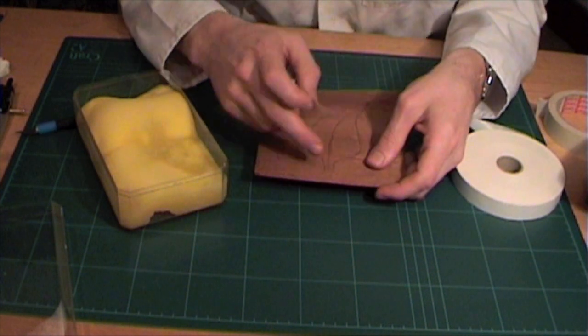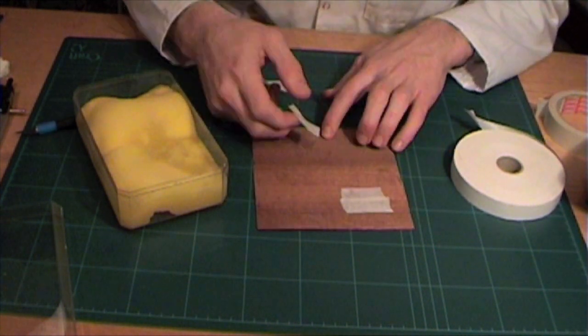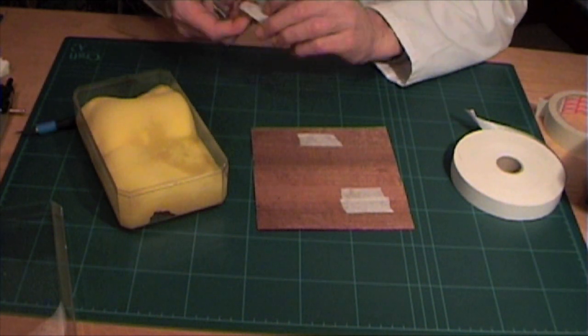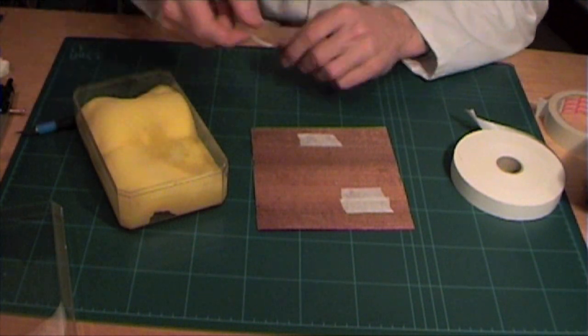Also, thin areas that do not have the grain running parallel to the cutting direction, such as at the stem of the leaf in this case.